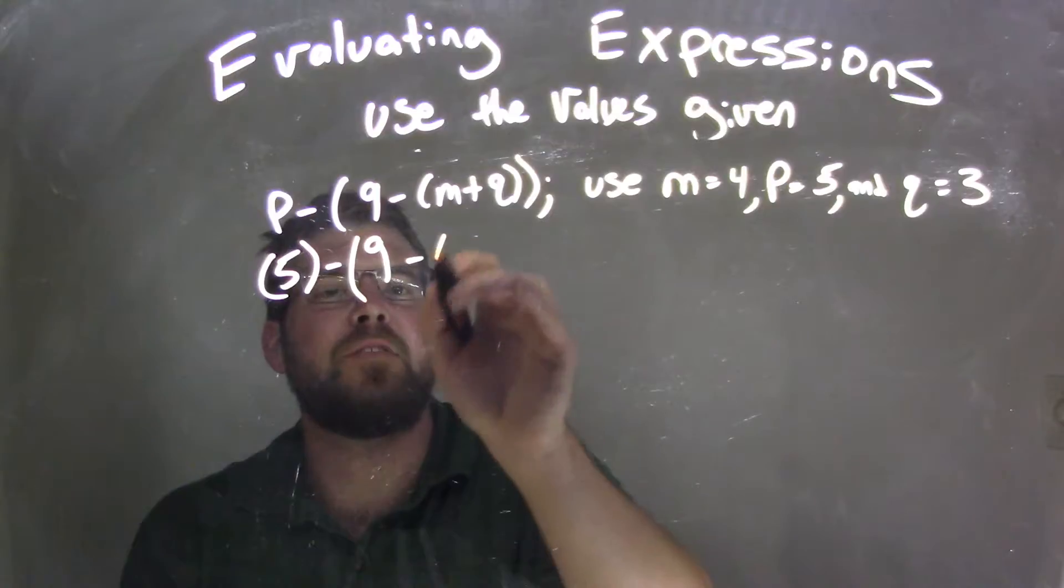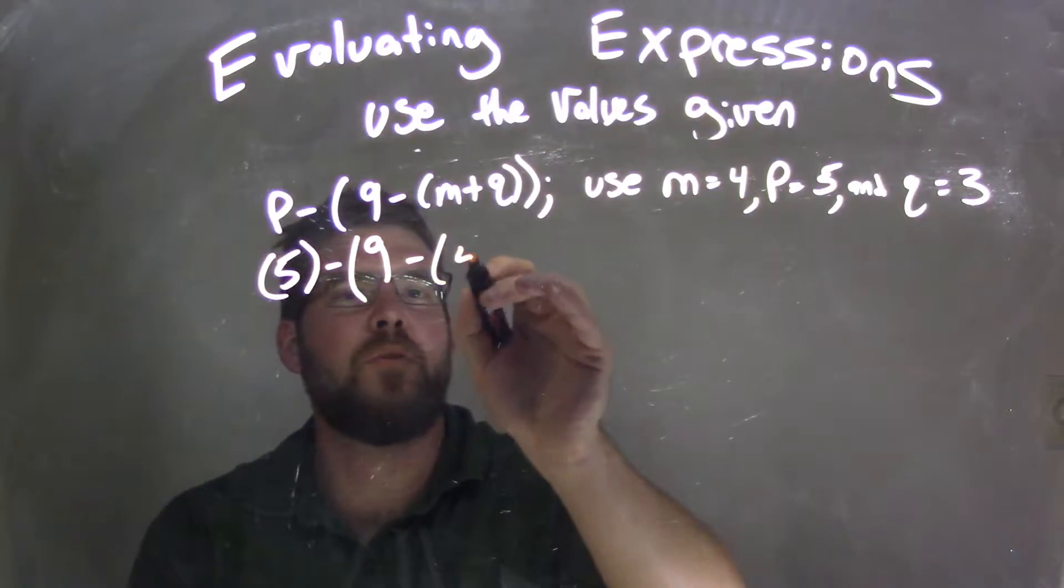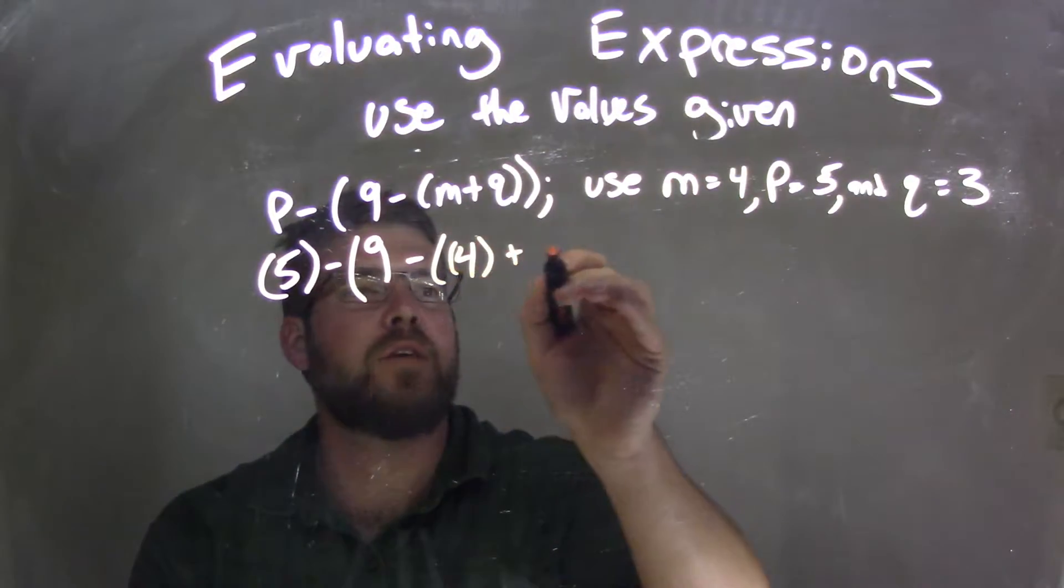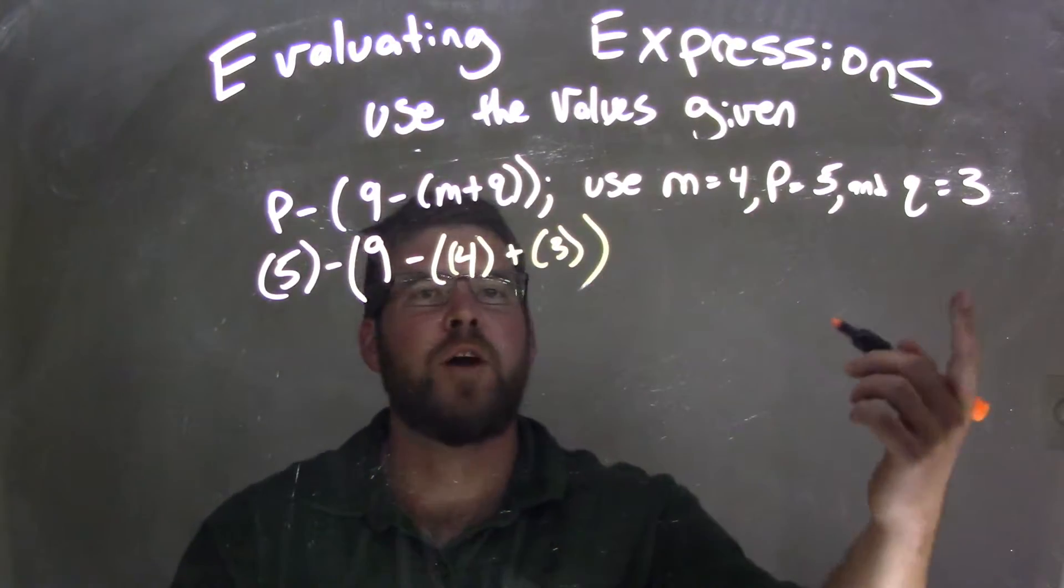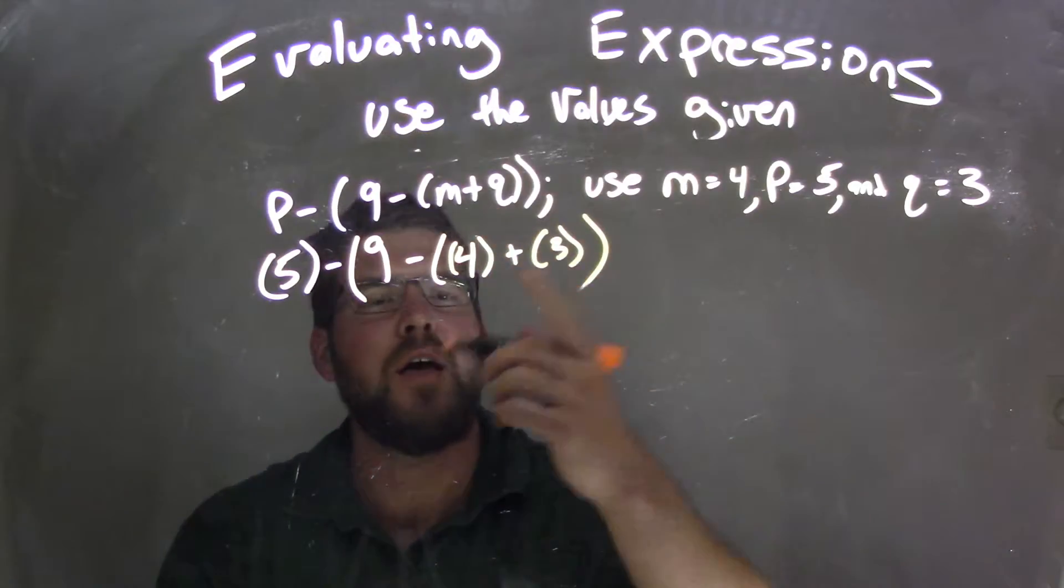minus m, which we know to be 4, plus q, which is 3. And now we've substituted every single one of these variables to the corresponding one here and put the numbers in.